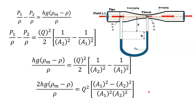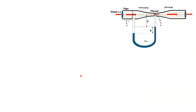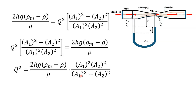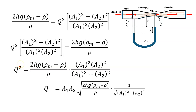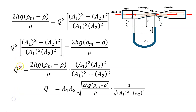Substituting the manometer result into the earlier equation: H·g·(ρM − ρ)/ρ = Q²/2 · (1/A2² − 1/A1²). Rearranging for Q²: Q² = 2·H·g·(ρM − ρ)/ρ · A1²·A2²/(A1² − A2²). Taking the square root, Q = A1·A2 · √[2·H·g·(ρM − ρ)/ρ] / √(A1² − A2²).